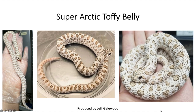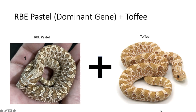Now let's get into dominant genes — I'm actually working on a presentation covering the genetics of hognose snakes, including dominant genes, codominant, the difference between codominant and incomplete dominant, as well as recessive using Punnett squares. I'm not going to really cover dominant genes in depth in this video, but the first one we're going to talk about is the RBE pastel mixed with the toffee.